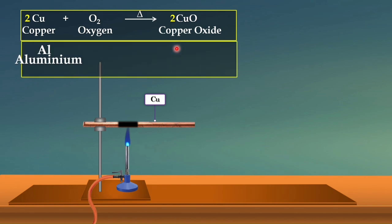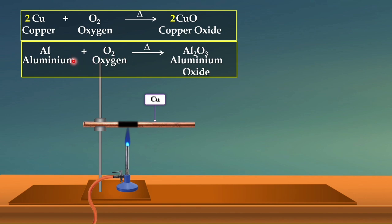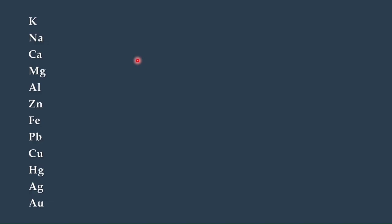Similarly, aluminium forms aluminium oxide on heating. The chemical equation is: aluminium plus oxygen on heating gives aluminium oxide. The formula for aluminium oxide is Al₂O₃, and this is the balanced chemical equation.